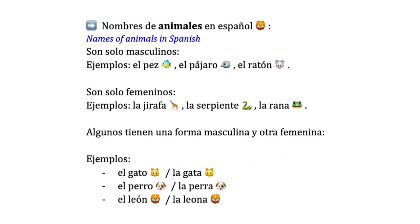Another case of study is the names of animals. Some animal names in Spanish are only masculine — el pez, el pájaro, el ratón — and some are only feminine — la jirafa, la serpiente, la rana. Some animals have both a masculine and feminine form, such as el gato or la gata, el perro or la perra, el león or la leona.